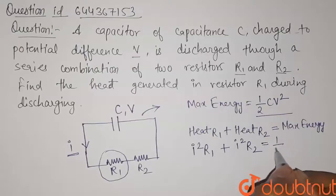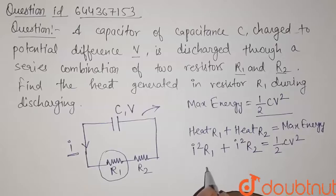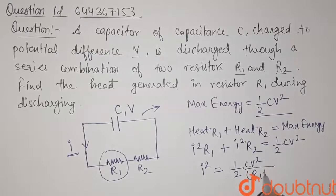And this will equal 1 upon 2 CV square. So from this we have the value of I square equals 1 upon 2 CV square divided by R1 plus R2.